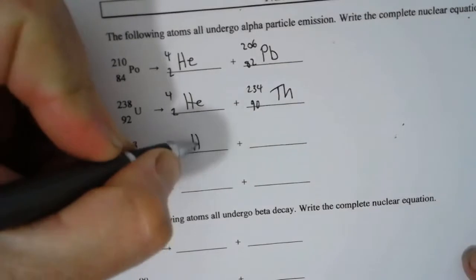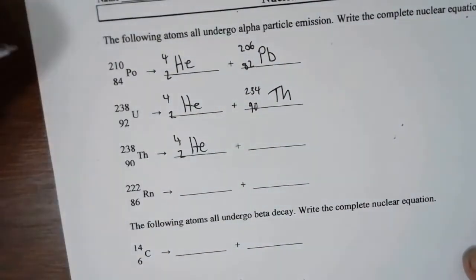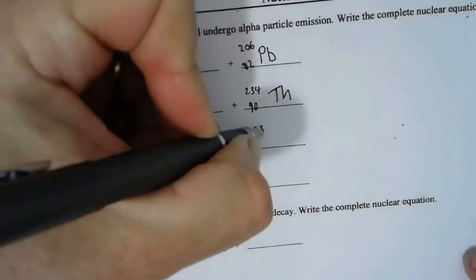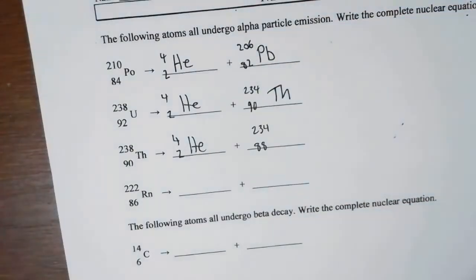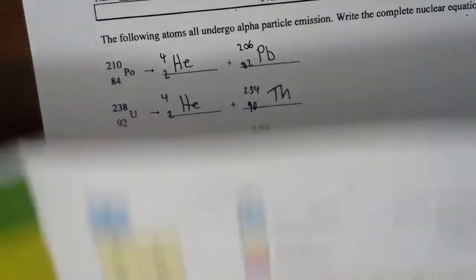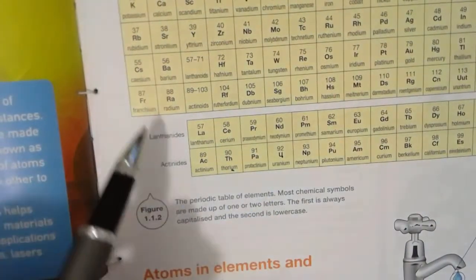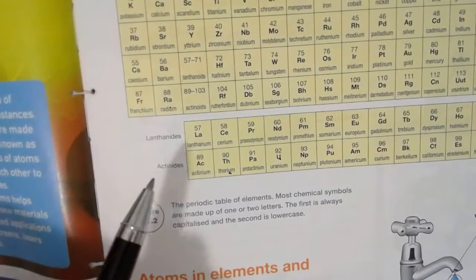So again, it's a helium nucleus, 4 2. It's an alpha particle. 238 minus 4 is 234. 90 minus 2 is obviously 88. Grab the periodic table, 88, and we can find 88 is here: radium, Ra.